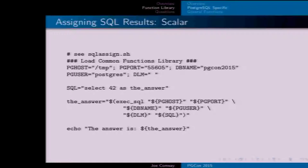To assign a query result to a variable, if you've got a single scalar value, use `$()` — the dollar-sign parentheses syntax — which executes the function in another context, the same as back-ticks. Back-ticks are the traditional way but are considered deprecated; the `$()` form is more modern. Since the result is a single value it just gets assigned directly to the variable and you can echo it out.